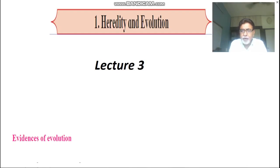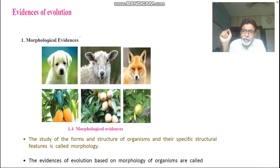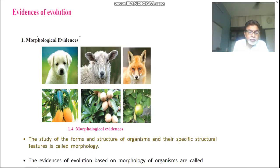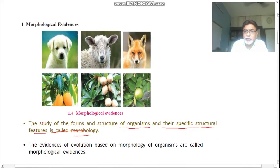The first one is morphological evidence. What is morphological evidence? Morphology is the study of the forms and structure of organisms — the external structure. The evidences of evolution based on morphology are called morphological evidences.